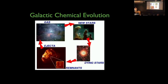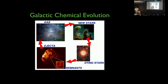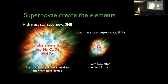What actually creates these elements? Let's talk about galactic chemical evolution. We start with some cold gas in a small segment of a galaxy. It collapses under gravity to form new stars, which go through their chemical evolution, creating heavier atoms in their cores. The most massive ones go supernova and eject those elements into the surrounding ISM, which then get reabsorbed in the next generation of stars.